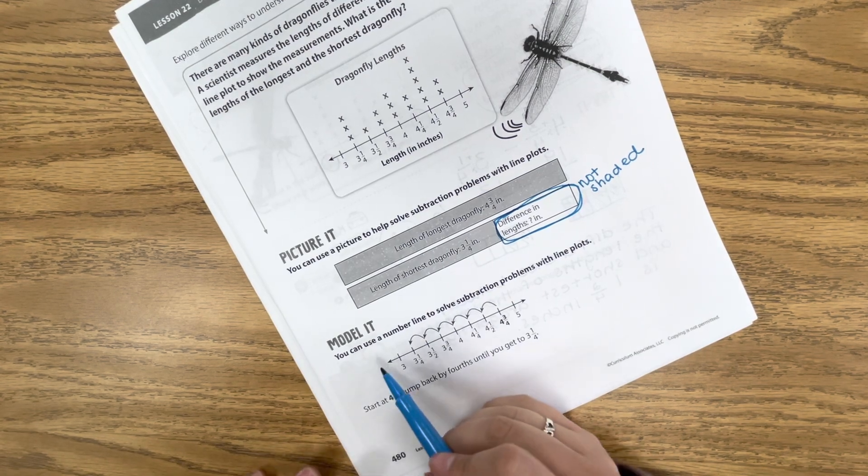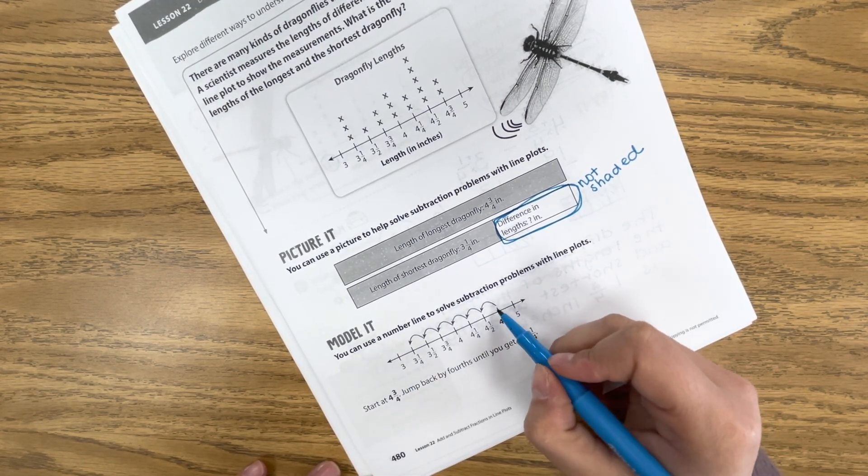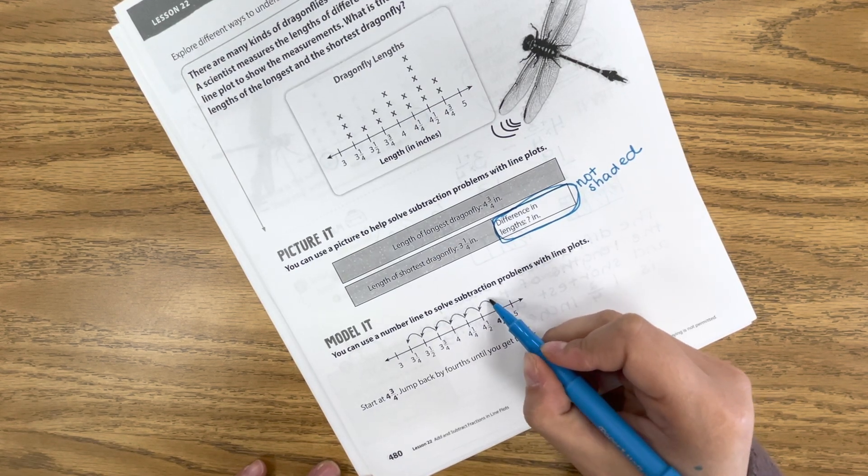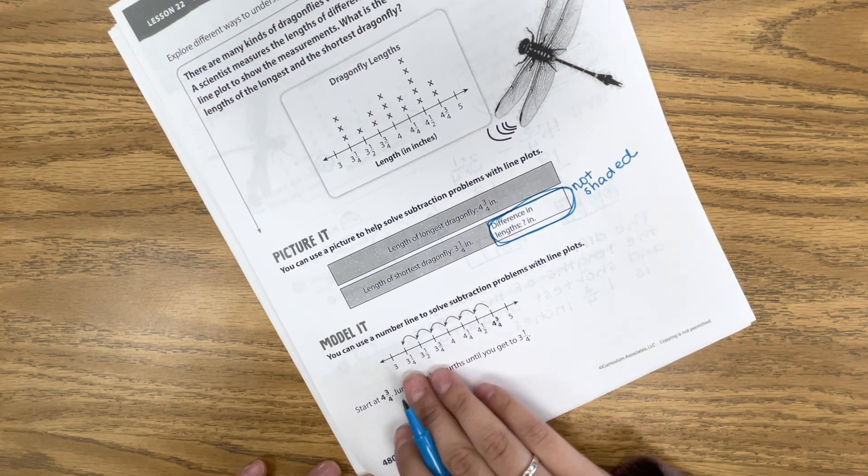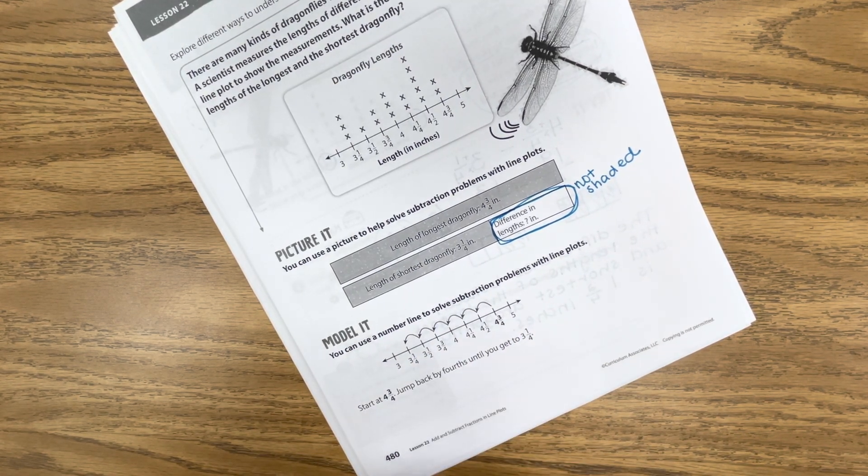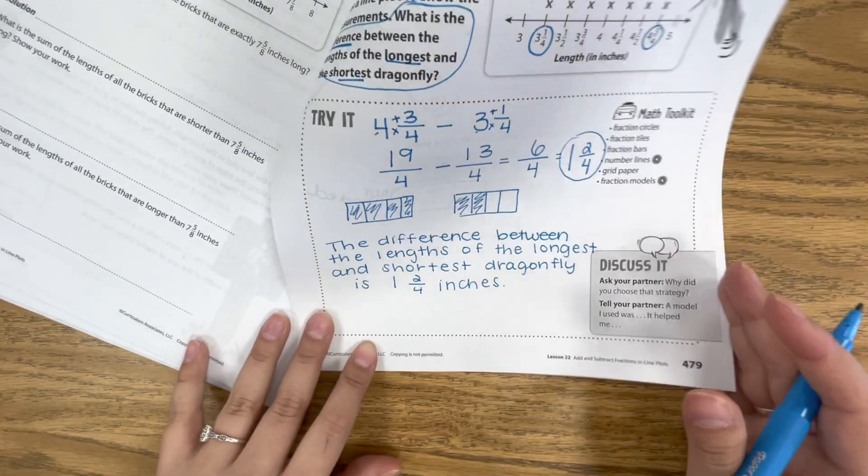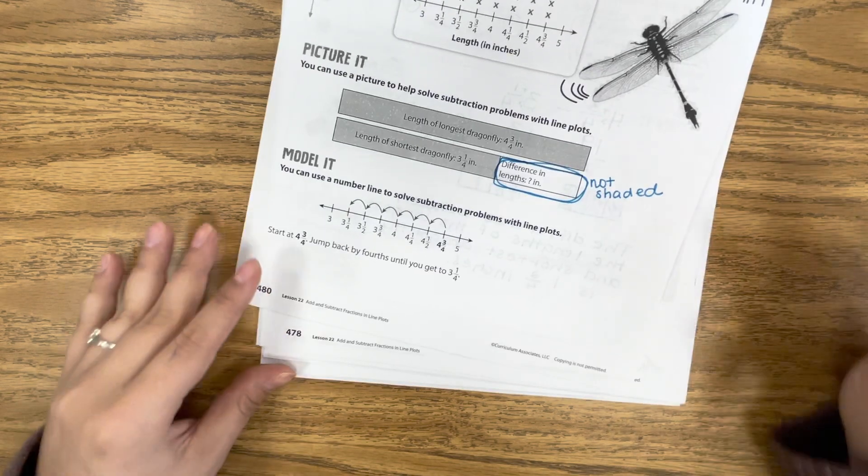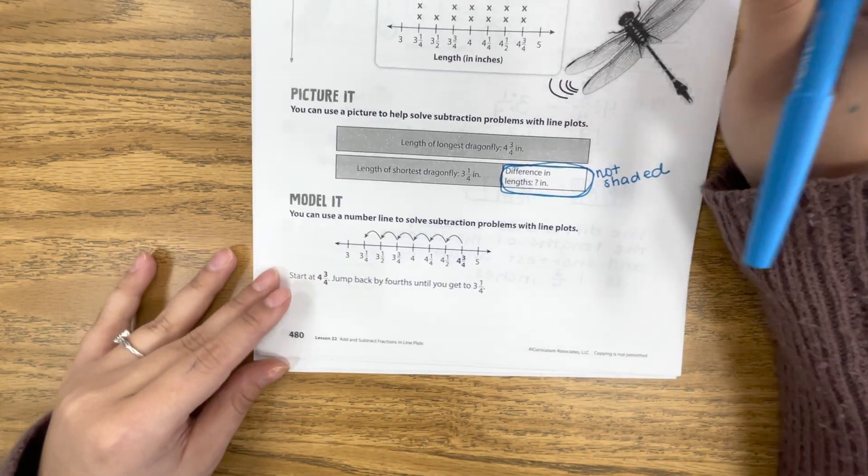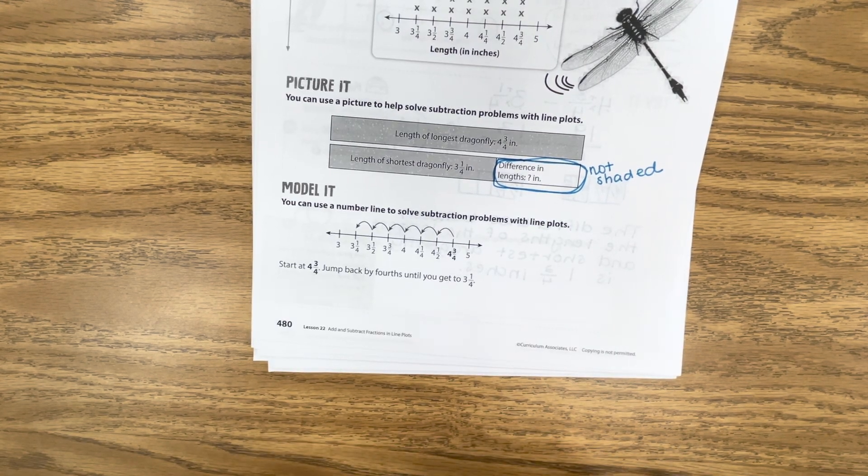But you could also use a number line so if we start at four and three fourths and we jump back by fourths, so one fourth two fourths three fourths four fourths five fourths six fourths, it would bring us to three and one fourth. Okay so this one does get trickier in my opinion, I feel like drawing the picture like this is easier and it just makes more sense but as always it's just whatever makes the most sense to you, whatever strategy you like to use best. So if you have any questions please pause now and ask, if not you can move right on to page 482.